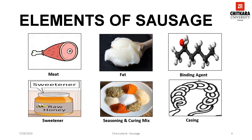The various elements used to make sausages include meat, fat, binding agents, sweetener, seasoning and curing mix, and casing. Pork is the most commonly used meat in sausage making, but other meats can also be used, like beef, veal, lamb, chicken, turkey, liver, and rabbit. Mixtures of pork plus one or more of these meats are often used.